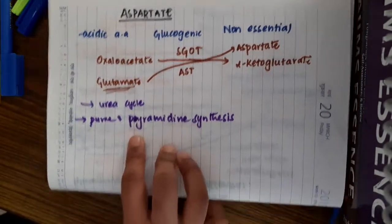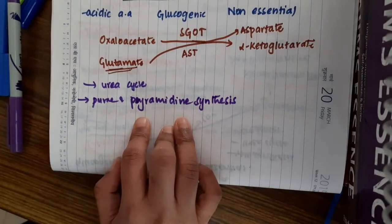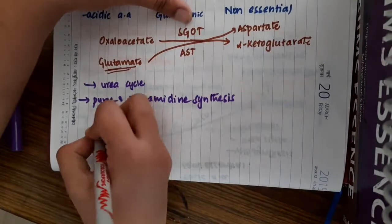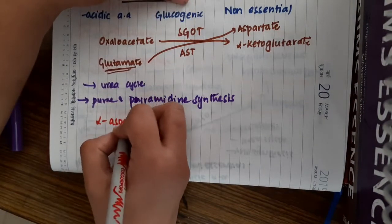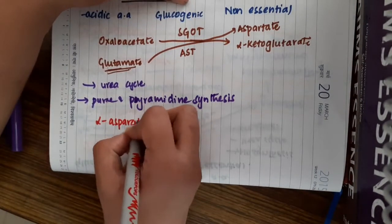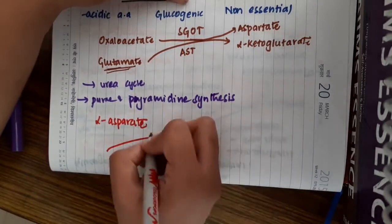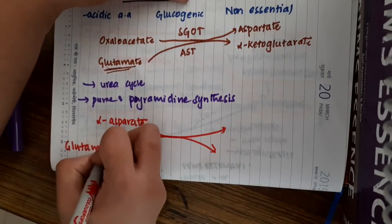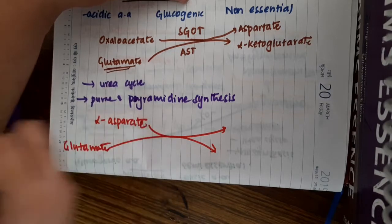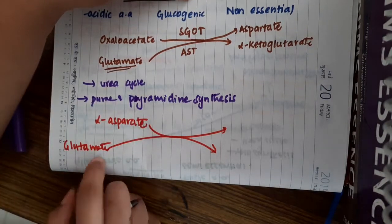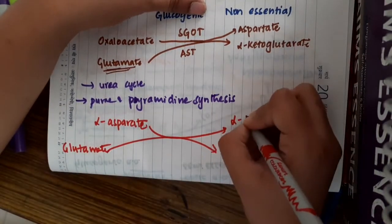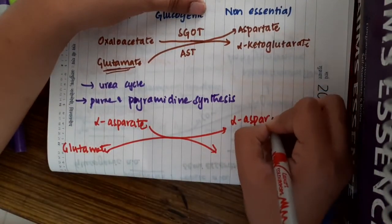There is one important thing - this aspartate can also be used for production or synthesis of one special product. L-aspartate will combine with glutamate and the amino group of glutamate is transferred to aspartate, forming L-asparagine.